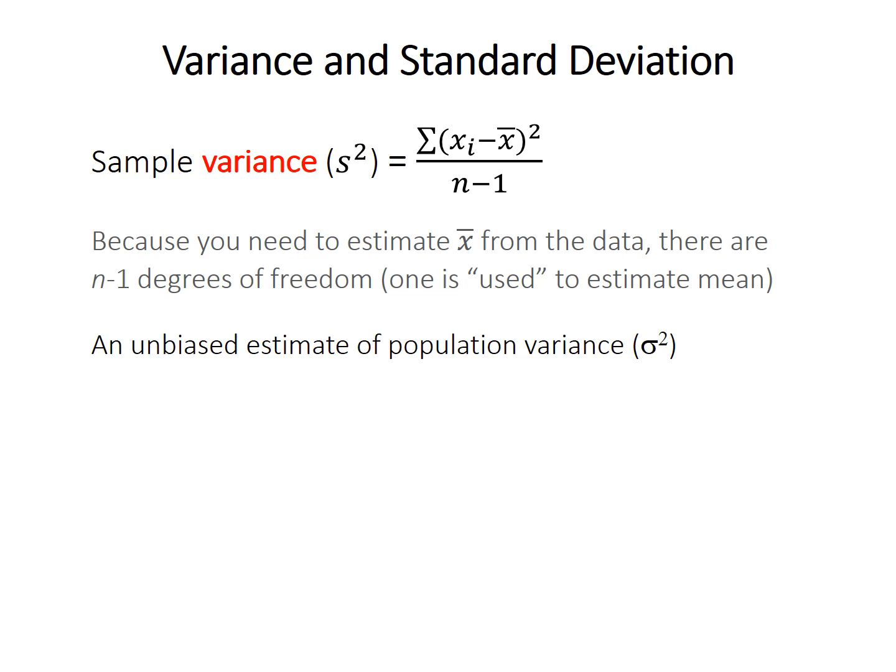So the sample variance s squared is used as an unbiased estimate of the population variance, which is given sigma squared. And so unbiased just means that there isn't a tendency for it to be either low or high. It doesn't mean that it's really precise, but it means that it's not going to be typically lower or typically higher. It could be lower, it could be higher, but we don't really know.